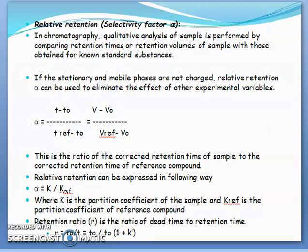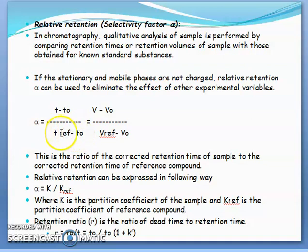Another term is relative retention or selectivity factor alpha. In chromatography, qualitative analysis of a sample is performed by comparing the retention time or retention volume of the sample with respect to the retention time of a standard compound. If the experimental conditions are the same, the relative retention can be explained by the following equation: relative retention alpha equals the reduced retention time of the sample divided by the reduced retention time of the reference compound.